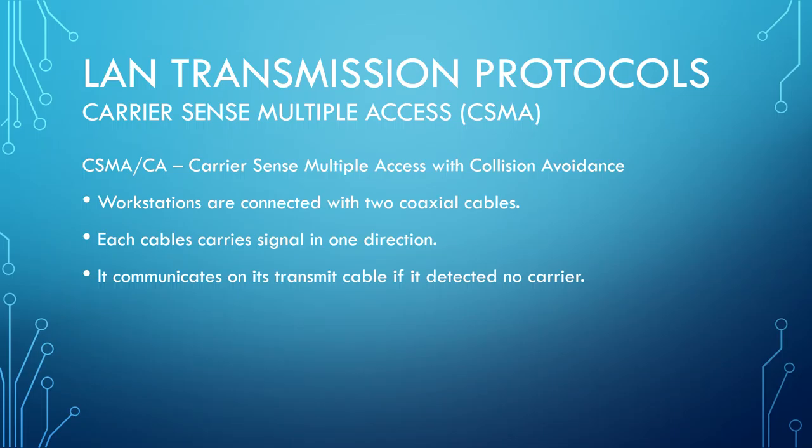With CSMA/CA, workstations are connected with two coaxial cables, each cable carrying a signal in one direction. It only communicates on the transmit cable if no carrier is detected.